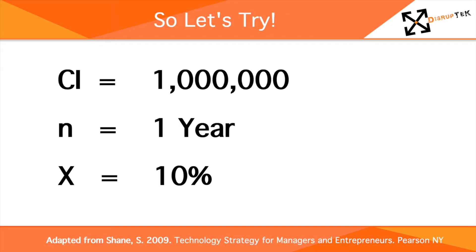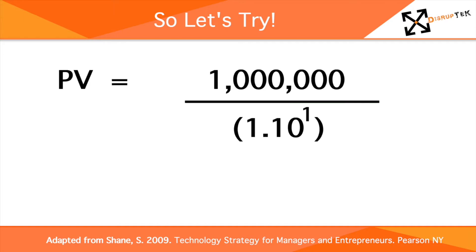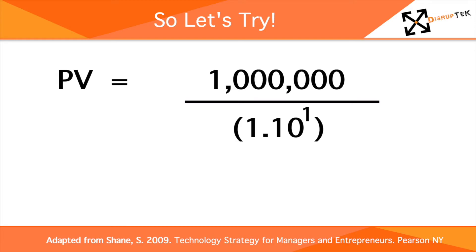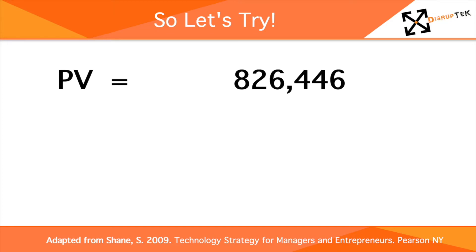So if you expect to bring in 1 million in year 1, the calculation is 1 million divided by 1.1 to the power of 1, which is simply 1 million divided by 1.1. This yields a value of 909,091 in whichever currency you are using. In year 2, the only difference is that the 1.1 factor in the equation is raised to the power of 2, and yields a value of 826,446. This lower value reflects the compound interest that you have lost by not investing the money in a bank over the last two years.